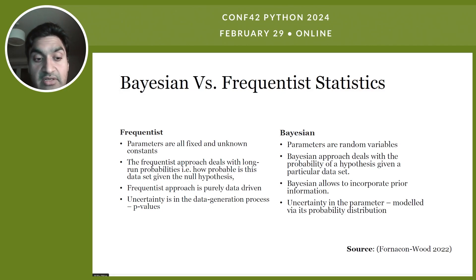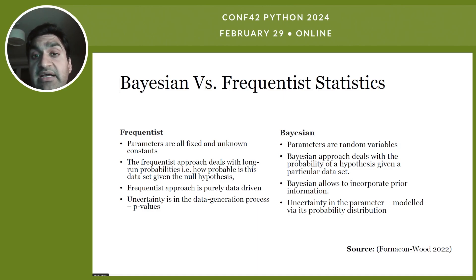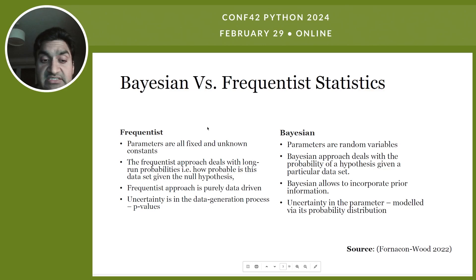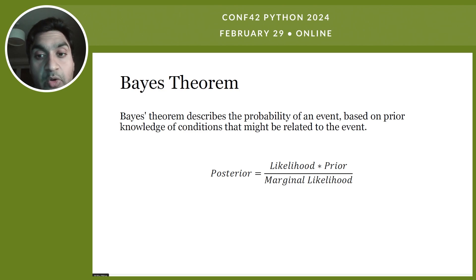In contrast, in Bayesian statistics, unknown model parameters are treated as random variables and are modeled using probability distributions. This approach inherently captures uncertainty within the parameters themselves, offering a more intuitive and flexible approach to quantify uncertainty. Bayesian statistical methods use Bayes' theorem to compute and update probabilities as you obtain new data.